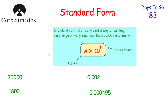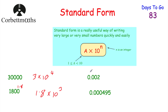Now here are some numbers to try yourself in Standard Form. 30,000: the digit 3 moves 4 columns to the left, so it's 3 × 10⁴. Check: 10⁴ = 10,000, times 3 = 30,000. 1,800: choose 1.8, move 3 columns to the left — 1.8 × 10³. 0.002: choose 2, count 3 zeros in front — 2 × 10^(-3). 0.000495: choose 4.95, count 4 zeros in front — 4.95 × 10^(-4).